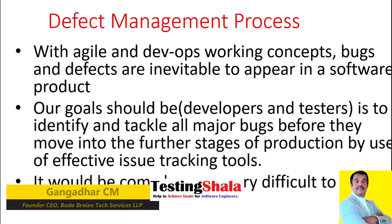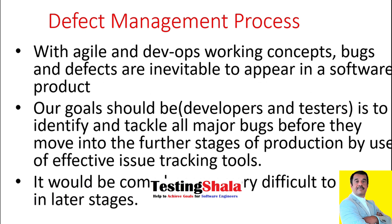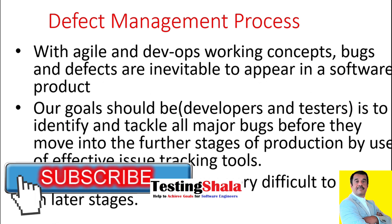The first one is we should tighten up our defect management processes. With the new way of working — like Agile or DevOps — we will keep getting bugs or defects very often. There is no way we can stop getting new defects or new bugs.